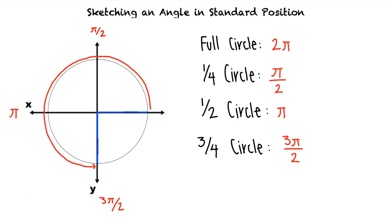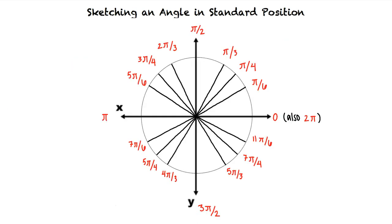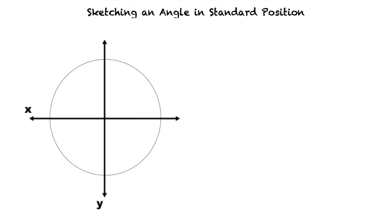Using a similar approach, we can find the radian measures of the special angles shown. Each angle corresponds to some fraction of the whole circle. Let's try an example problem. We're asked to sketch theta equals 5 pi thirds in standard position. Since the angle is positive, we rotate the terminal side in the counterclockwise direction.